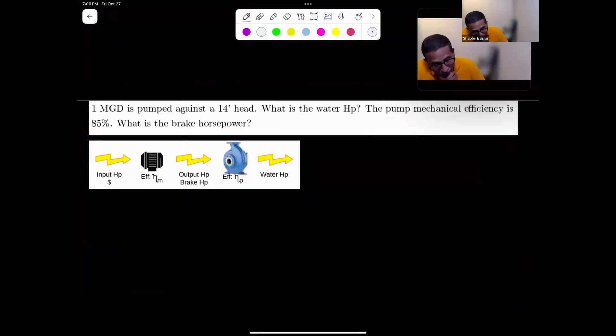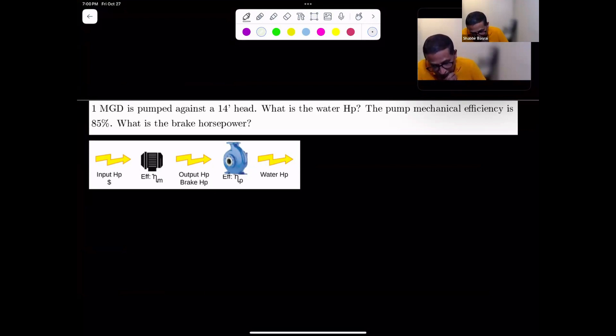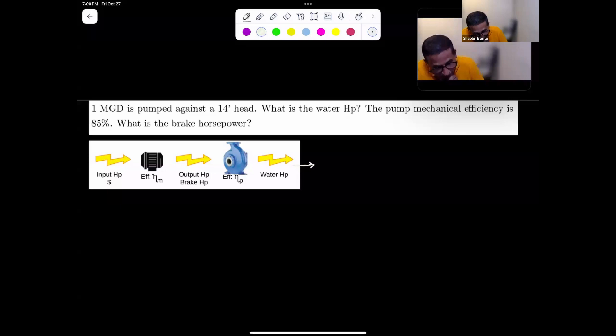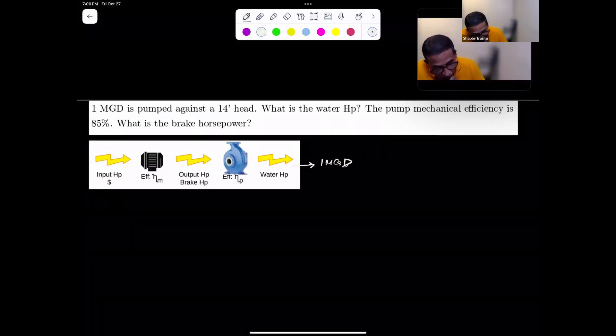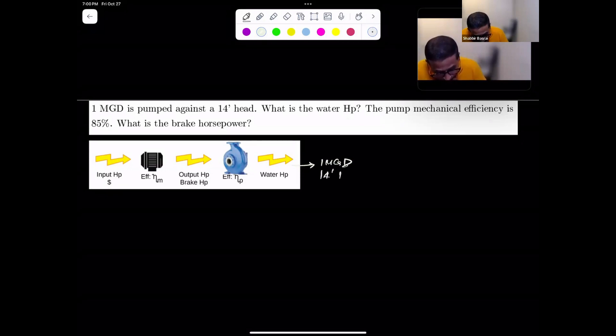In this case, I have one MGD pumped against a 14-foot head. What is the water horsepower? And if the pump mechanical efficiency is 85%, what is the brake horsepower? In this particular case, you're using this to pump one MGD of water with a head of 14 feet.